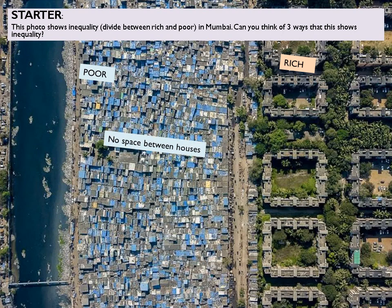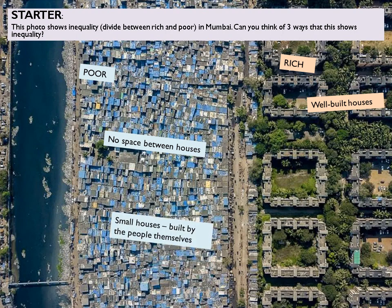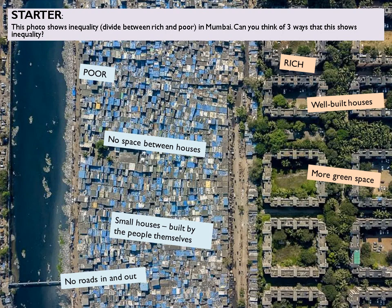We have very little or no space between houses. We have well-built houses from what we can see in the photo on the right. A general point about the photograph: you can't actually tell from the photograph that the houses are built by the people themselves, so if you are asked in exams to look for differences or comparisons, stick to the information that you can see. There is more green space in the richer area, and there are no visible roads in and out of the area on the left, but there is evidence of cars, roads, and parking spaces in the richer area on the right.